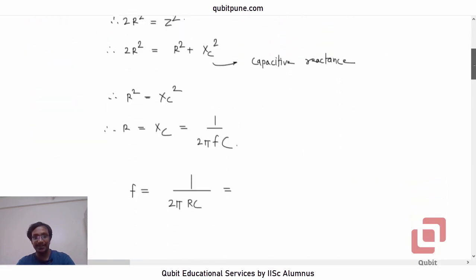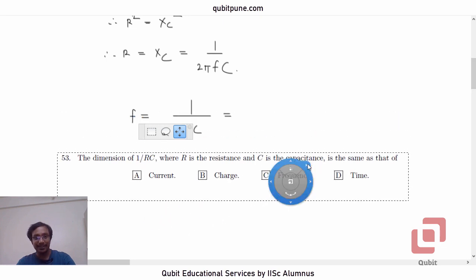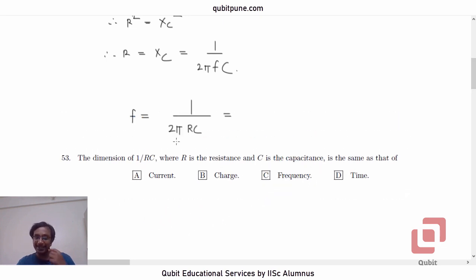It is in front of you. Because 2 pi is a dimensionless number. It is radians actually. So, dimension of 1 upon RC is same as that of frequency. So, correct option is C for question 53, if you know that.